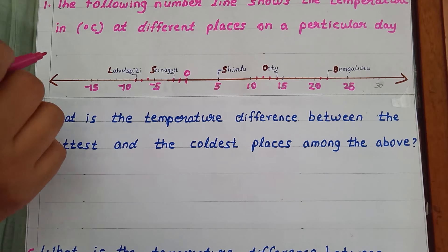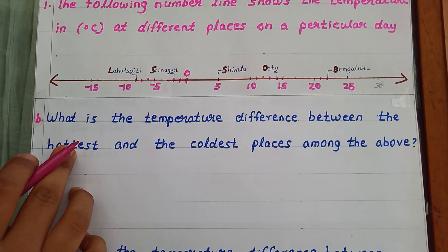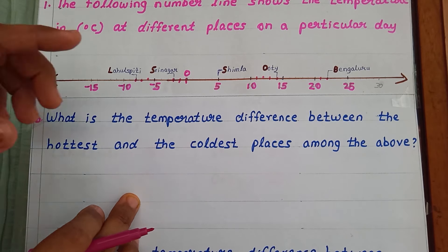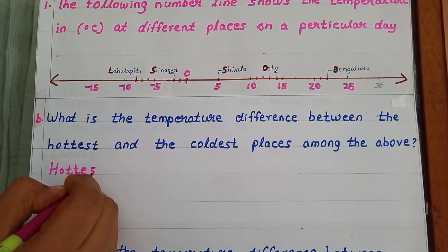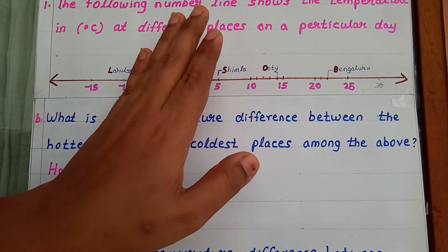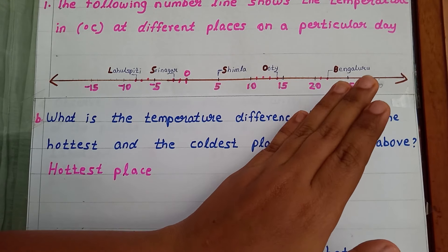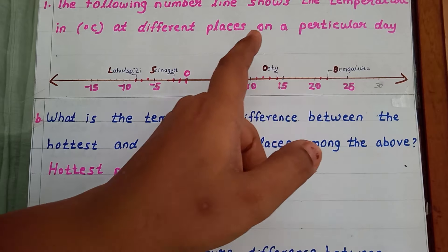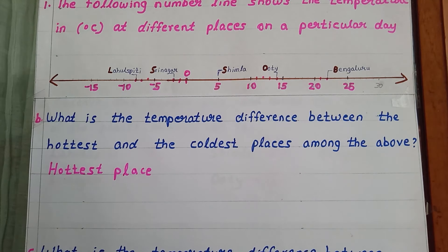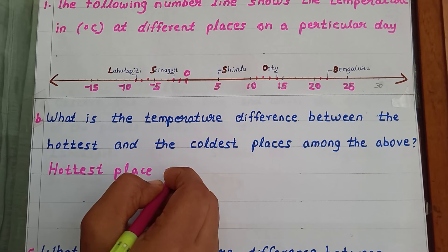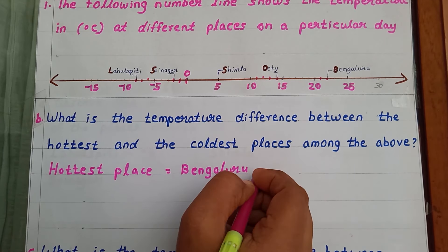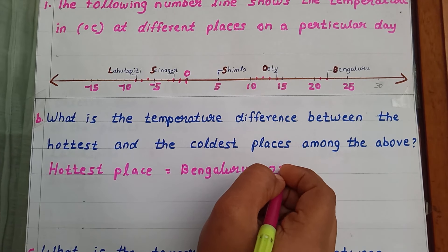Question B says: what is the temperature difference between the hottest and coldest places among these 5 places? First we want to find out which is the hottest place. On the number line, going to the right the number is increasing. Bangalore is on the right side of each place, so Bangalore is the hottest place with a temperature of 22 degrees Celsius.